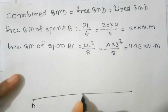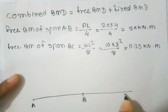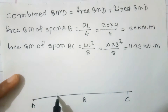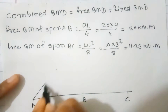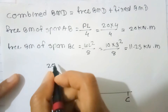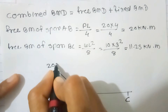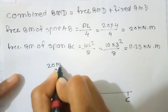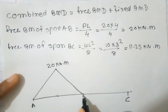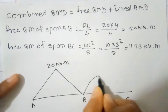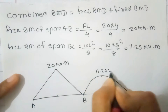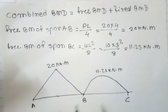For the beam ABC: the 20 kN load acts at the center of span AB, giving a free bending moment of 20 kN·m. Due to the UDL over span BC, the free bending moment is parabolic with a maximum of 11.25 kN·m.